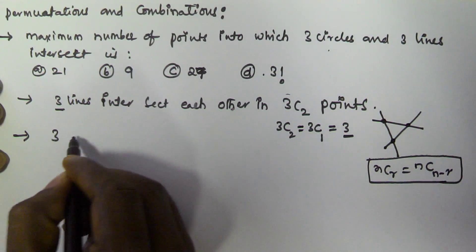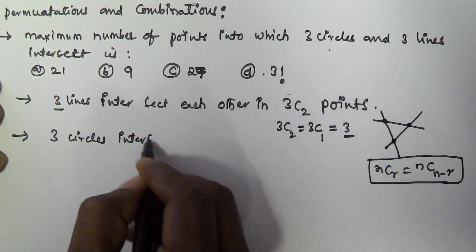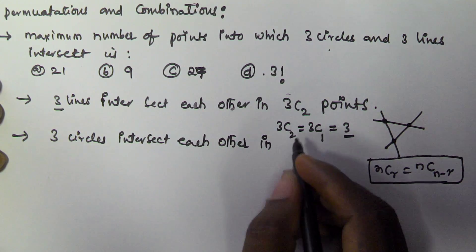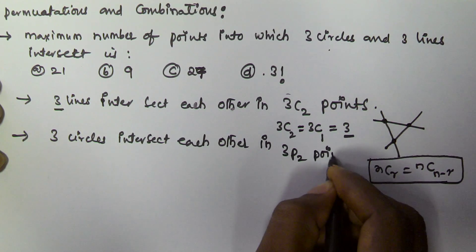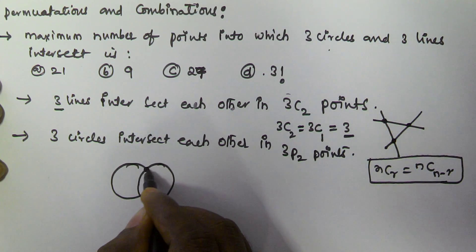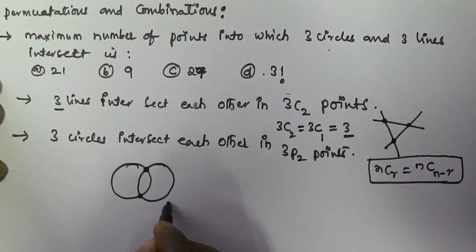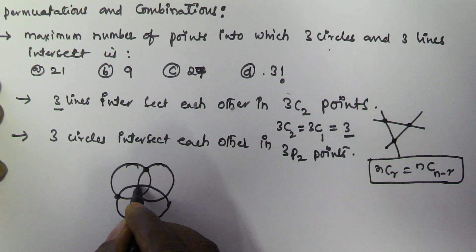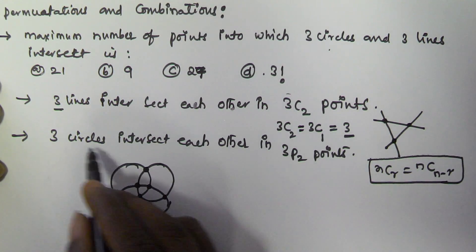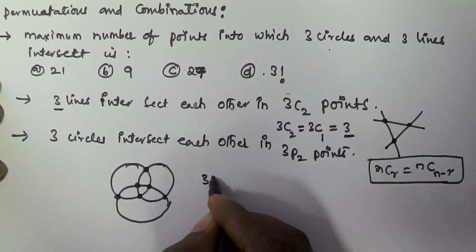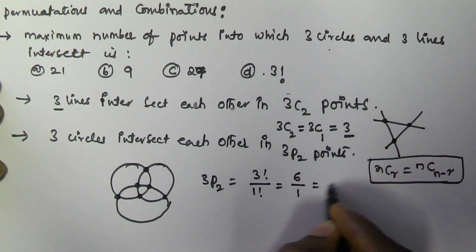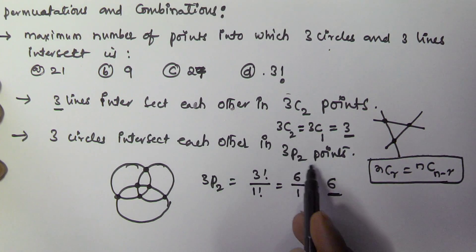Three circles intersect each other in 3P2 points. Whenever two circles intersect each other, they make 2 points. When a third circle intersects, it makes 4 more points — 1, 2, 3, and 4 — so the total number of points is 6. The value of 3P2 equals 3 factorial divided by (3 minus 2) factorial, which is 6 divided by 1, equal to 6. So three circles intersect each other in 6 points.